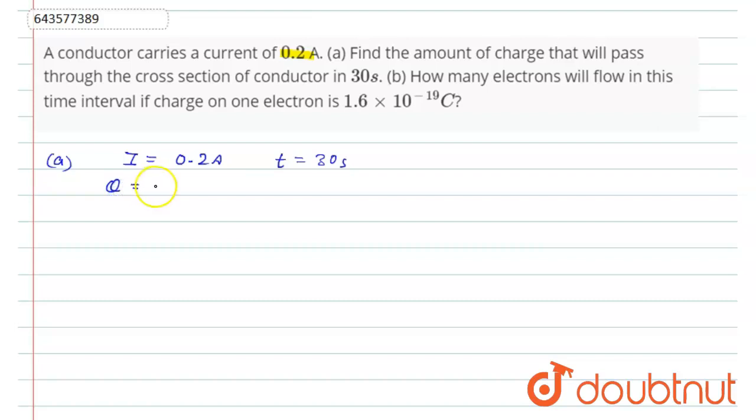Get it? From here what we get is 0.2 × 30 which equals 6 coulomb. Coulomb is the SI unit of charge.